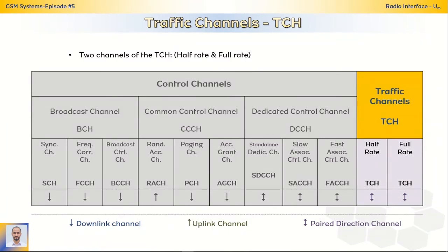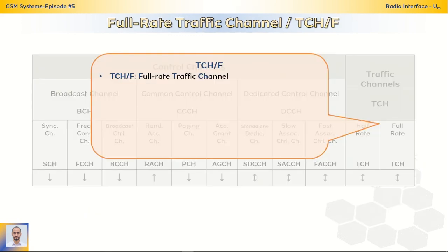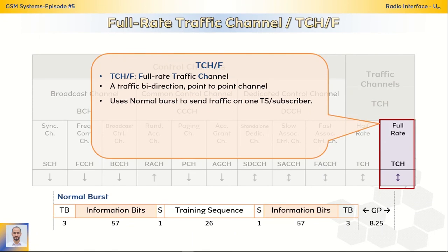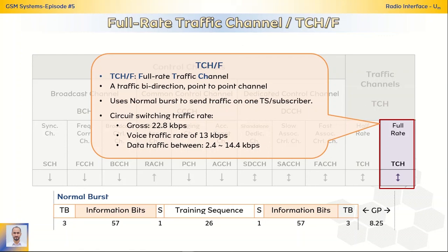The following slides will cover the traffic channels for this episode. We have two types of traffic channels: full-rate and half-rate. The full-rate traffic channel is a bidirectional uplink and downlink point-to-point channel. It uses the normal burst to send traffic on one time slot for one subscriber. The circuit switching traffic rate is 22.8 kbps gross 13 kbps for voice traffic, and between 2.4 to 14.4 kbps for data traffic.